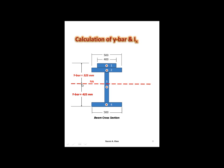To get from the neutral axis to the top edge of the cross-section, I'm going to take the whole height minus 425. The whole height is 750, so 750 minus 425 gives you 325. So I have the distance from the neutral axis to the two outer edges — I need those y-bars for my calculation of stress.